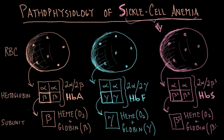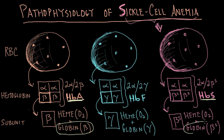This type of globin is different — it's a beta-S globin. Looking at hemoglobin type A found in healthy individuals and hemoglobin type S found in individuals with sickle cell anemia, the only difference between these two types of hemoglobins are the globin proteins that make up the beta subunits — beta versus beta-S. So the question becomes: how are these globin proteins different, and why?